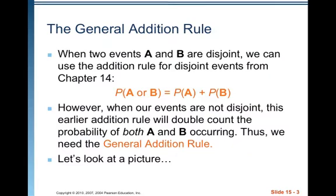When two events are disjoint, we can use the addition rule for disjoint events from Chapter 14, which is the probability that A or B equals the probability of A plus the probability of B. Remember that means if A and B are disjoint, they are mutually exclusive — A and B have nothing in common, so you can just add the probability of A plus the probability of B because they never occur at the same time.